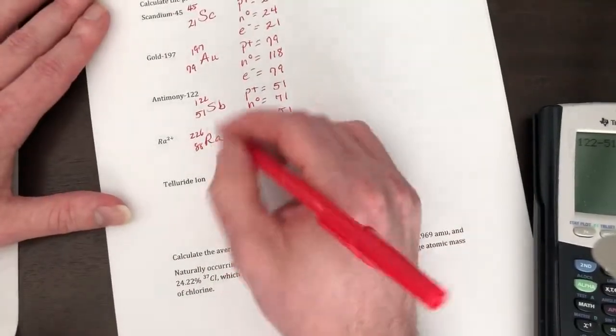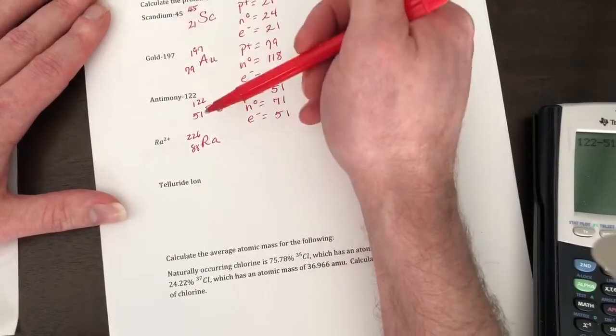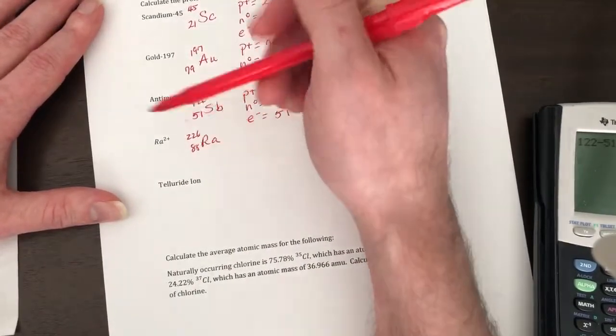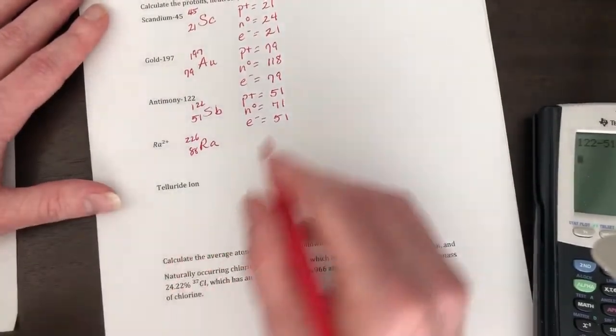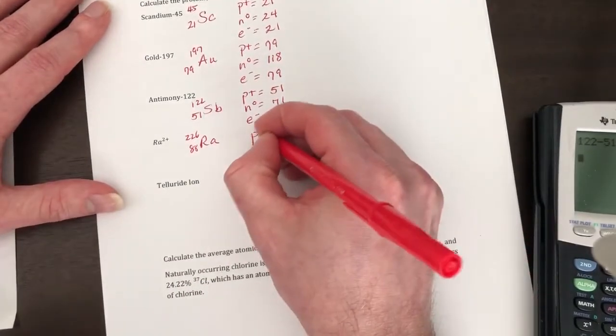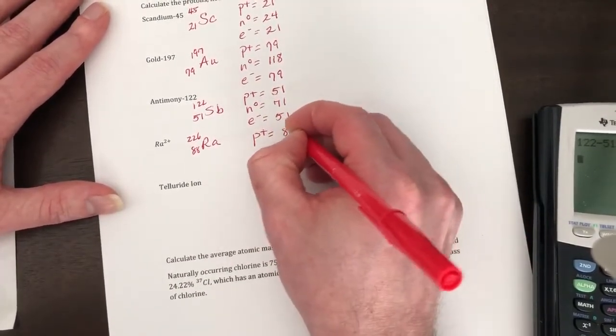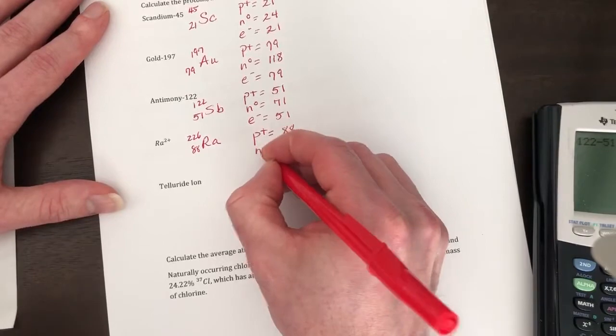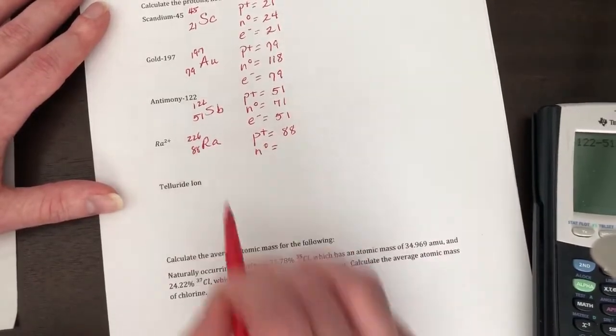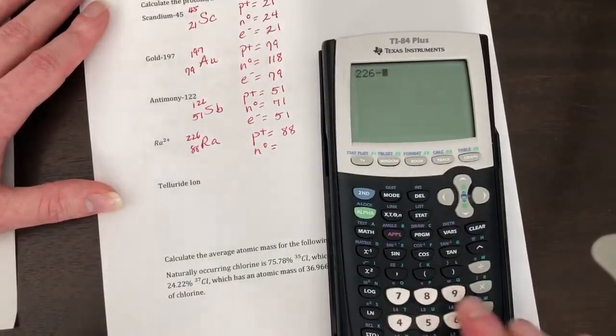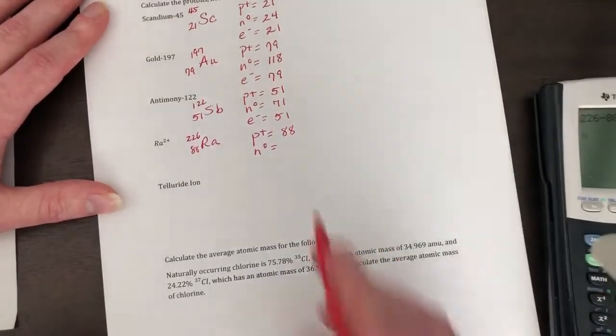So if it doesn't give us the atomic mass like in these three examples, then we're gonna assume that it's what it is on the periodic table rounded to the nearest whole number. So protons is gonna be equal to 88. Your neutrons, it's gonna be 226 minus 88, which is 138.